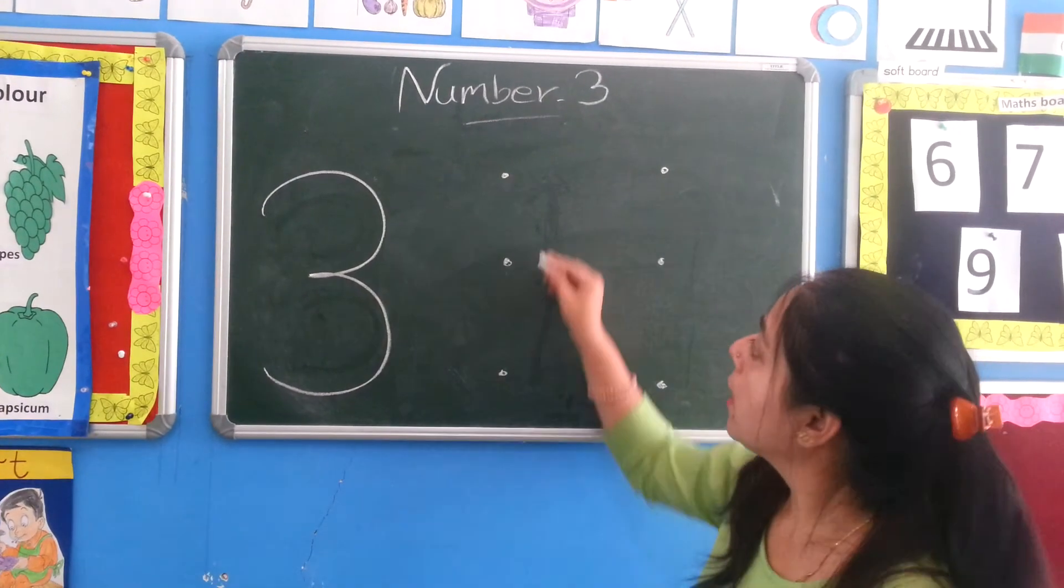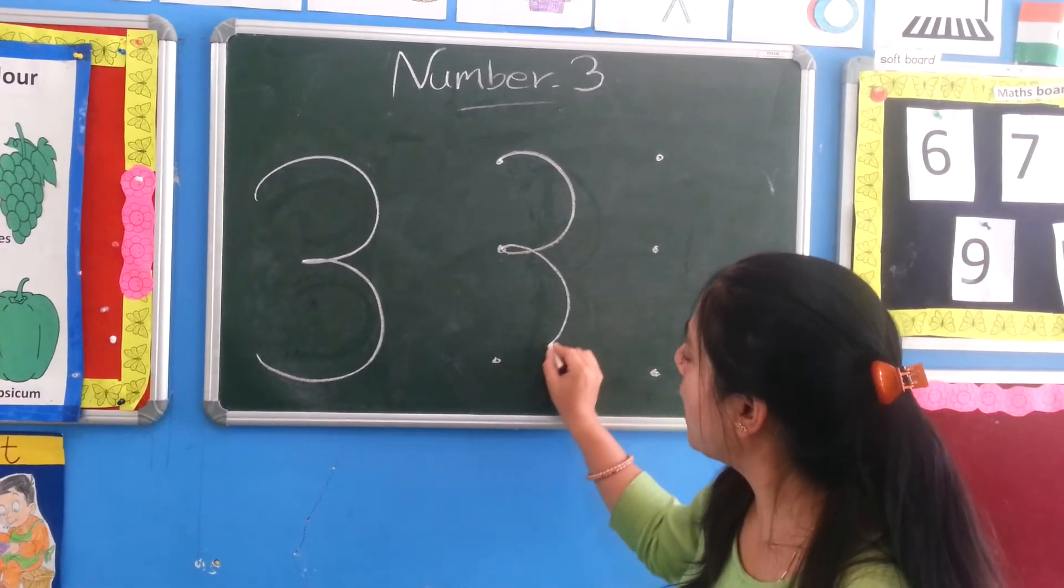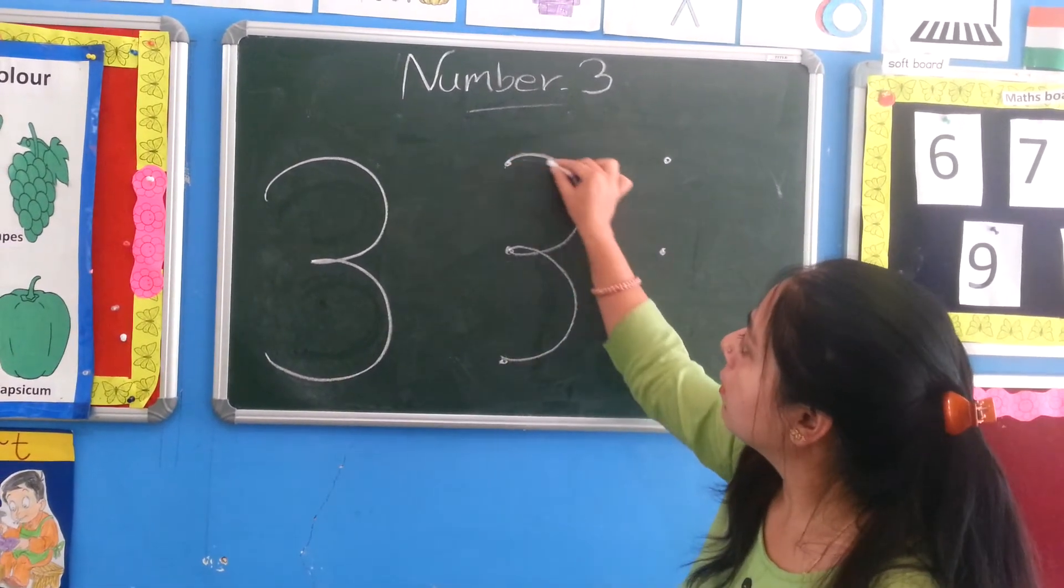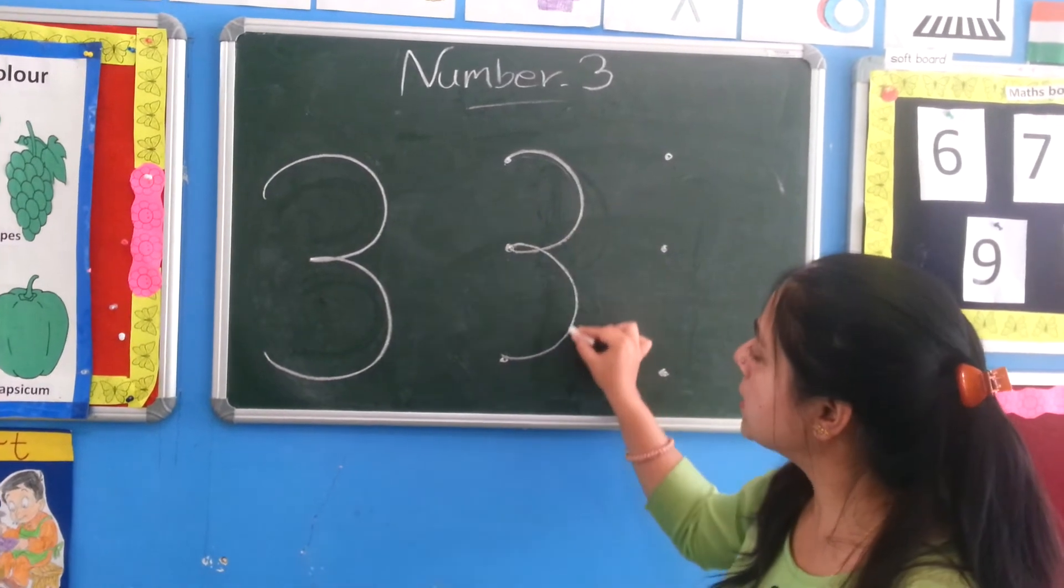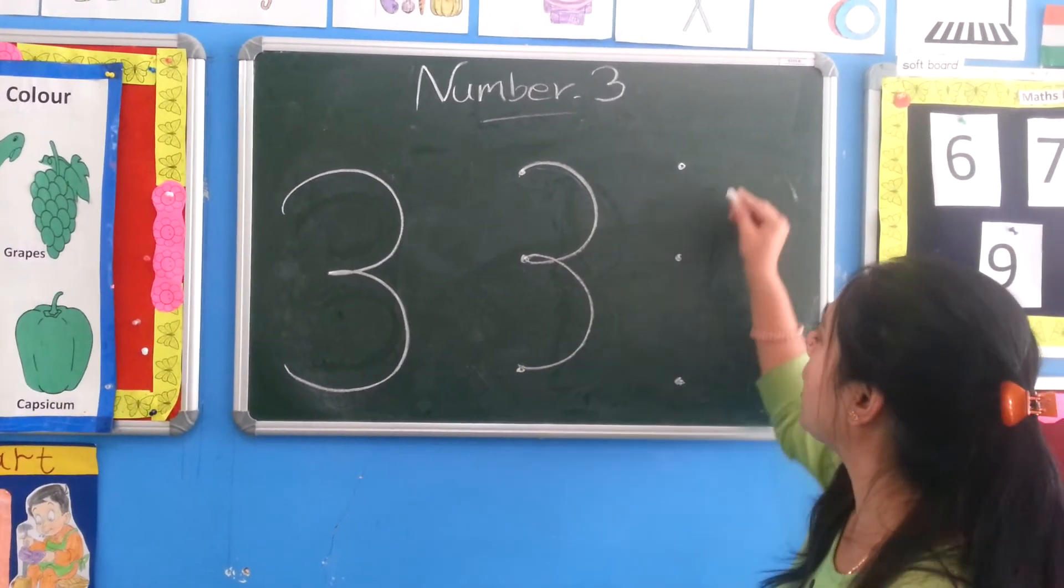Left open curve. Once again, left open curve. See? Left open curve. Once again, left open curve. Two times we curve. One more time.